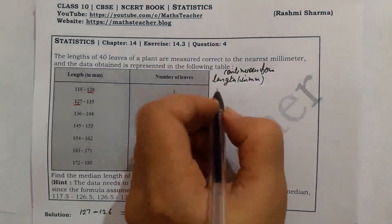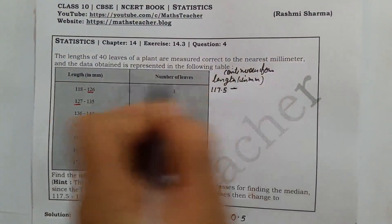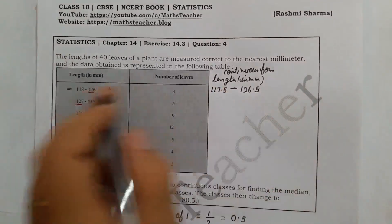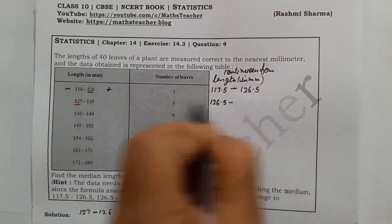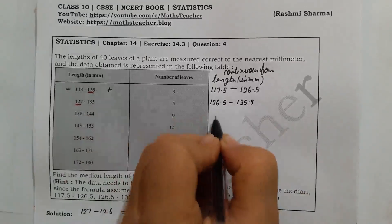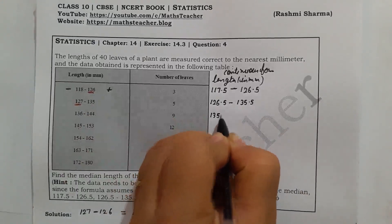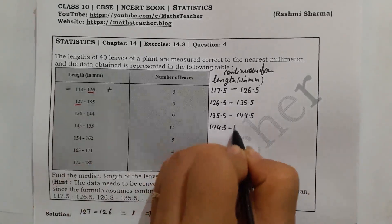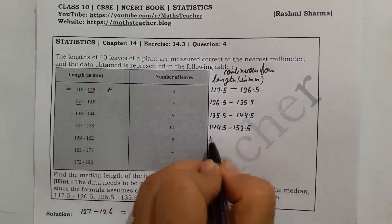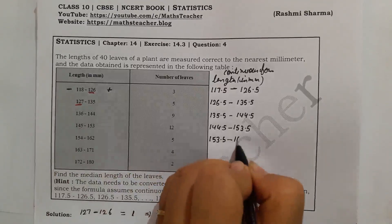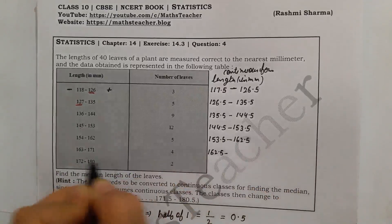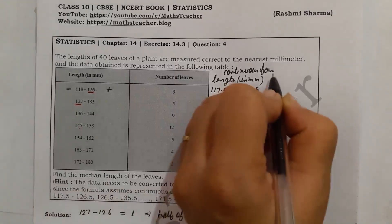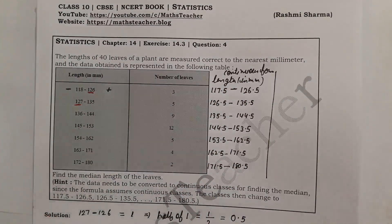So the converted class intervals become: 117.5–126.5, 126.5–135.5, 135.5–144.5, 144.5–153.5, 153.5–162.5, 162.5–171.5, and 171.5–180.5 (approximately 173.5–183.5). In this way we change our data into exclusive or continuous form.